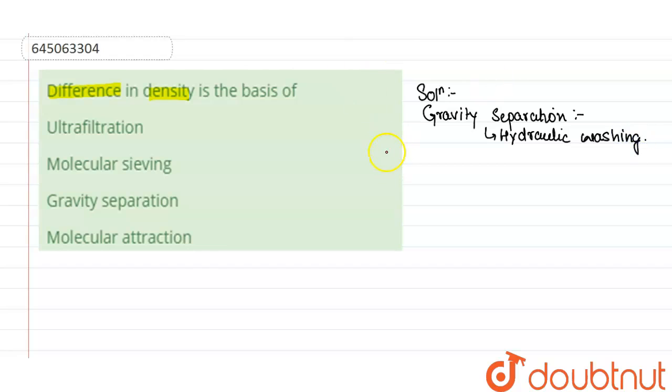The principle behind this is there is difference in specific gravity of ore and gang. Gang are the impurities present in the ore. So difference in specific gravity of the ore and gang particles.